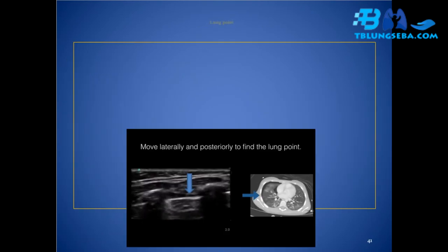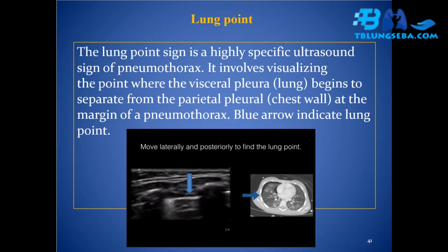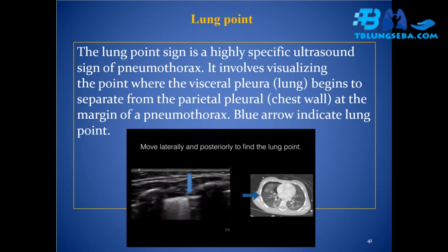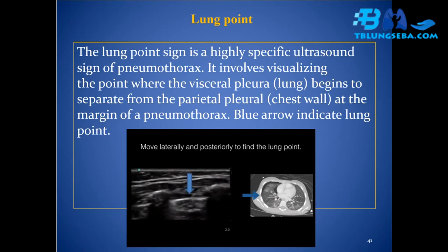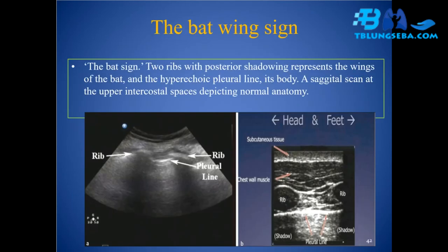Lung point: the lung point sign is a highly specific ultrasound sign of pneumothorax. It involves visualizing the point where the visceral pleura (lung) begins to separate from the parietal pleura (chest wall) at the margin of a pneumothorax. A blue arrow indicates the lung point.